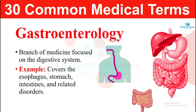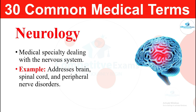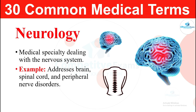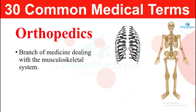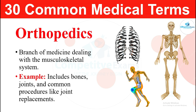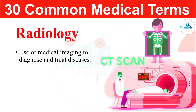The next medical term: neurology. Neurology is a medical specialty dealing with the nervous system. It addresses brain, spinal cord, and peripheral nerve disorders. The next term: orthopedics. Orthopedics is a branch of medicine dealing with the musculoskeletal system. It includes bones, joints, and common procedures like joint replacements.